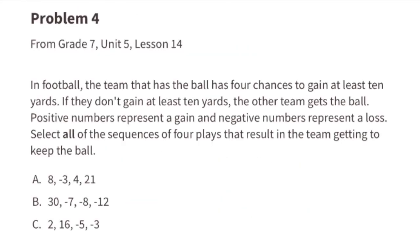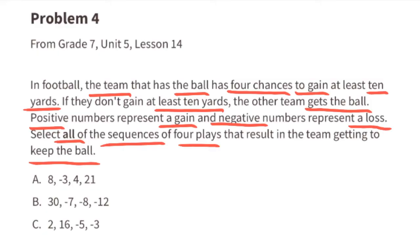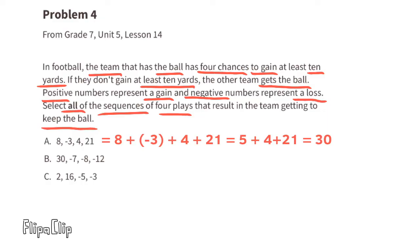Problem Number 4, from seventh grade Unit 5, Lesson 14: In football, the team with the ball has four chances to gain at least 10 yards. If they don't, the other team gets the ball. Positive numbers represent a gain and negative numbers represent a loss. Select all sequences of four plays that result in the team keeping the ball. Sequence a: gained 8, lost 3, gained 4, gained 21 — a total gain of 30 yards, so they keep the ball.